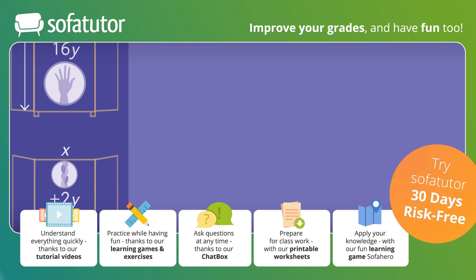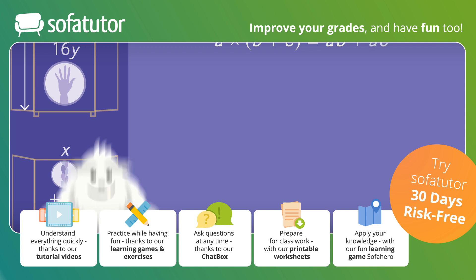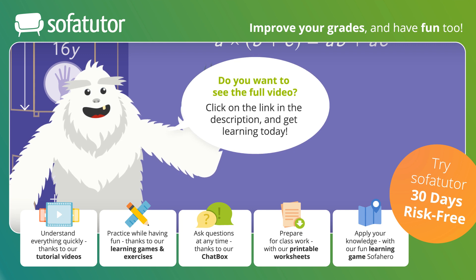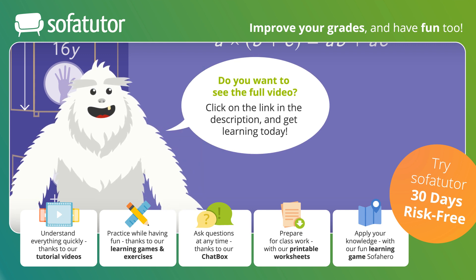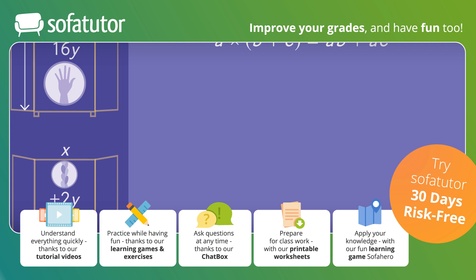To do this, you can use the distributive property. Remember the distributive property? A times the quantity b plus c equals ab plus ac. You can apply this property to numbers, variables, and polynomials. For this expression, a equals 16y, b equals x, and c equals 2y. Now, solve by distributing the 16y to the two terms that are summed inside the parentheses.